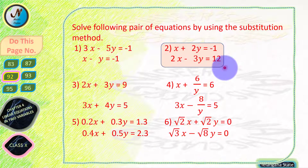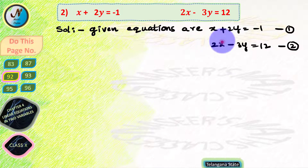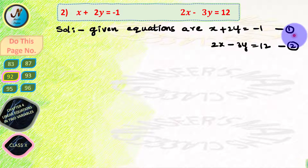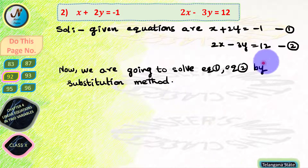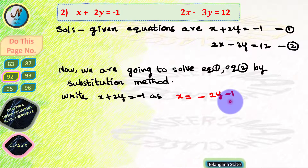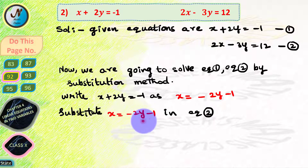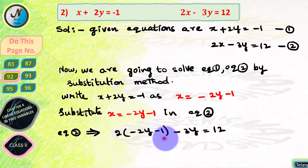Now we solve page number 92, problem 2 by substitution method. Two linear equations are given: x plus 2y equals minus 1 — let this be equation 1 — and 2x minus 3y equals 12 — let this be equation 2. To solve by substitution method, we write equation 1 as x equals minus 2y minus 1, by transposing 2y to the RHS. We substitute x equals minus 2y minus 1 in equation 2.